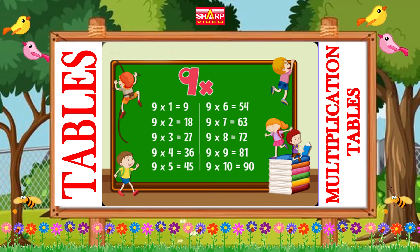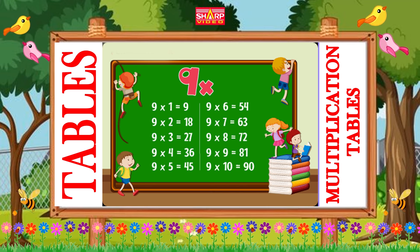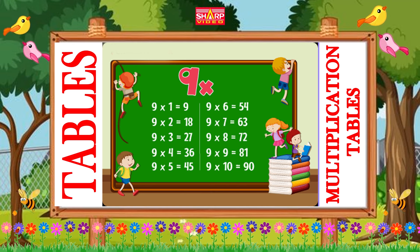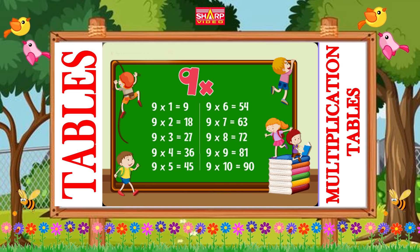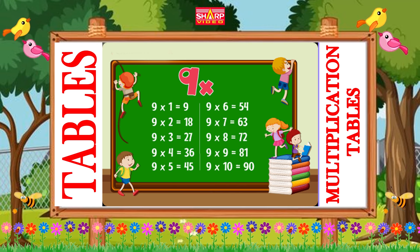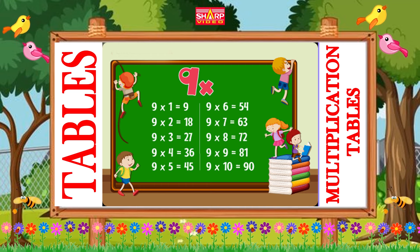Nine sixes are fifty-four, nine sevens are sixty-three, nine eights are seventy-two, nine nines are eighty-one, nine tens are ninety.